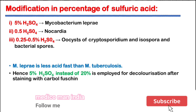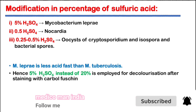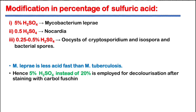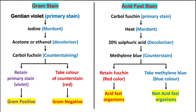We use 5% H2SO4 for Mycobacterium leprae, 0.5% for Nocardia, 0.25 to 0.5% H2SO4 for oocysts of Cryptosporidium and Isospora. Mycobacterium leprae is less acid fast than Mycobacterium tuberculosis, therefore 5% H2SO4 is used instead of 20%. They will ask: why is 5% H2SO4 used for Mycobacterium leprae? It is because Mycobacterium leprae is less acid fast.